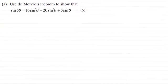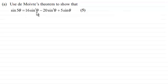Hi there. In this part of the question we're asked to use De Moivre's theorem to show that sine 5 theta is equal to 16 sine to the power 5 of theta minus 20 sine cubed theta plus 5 sine theta. If you'd like to have a go at this and haven't done so already, just pause the video. Come back when you're done and you can check your solution against mine.